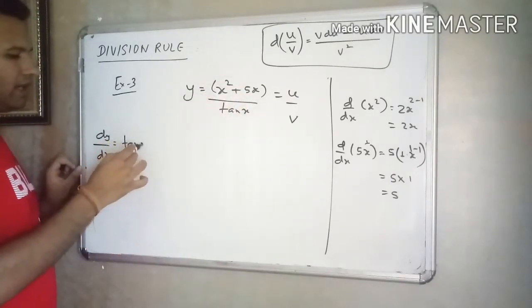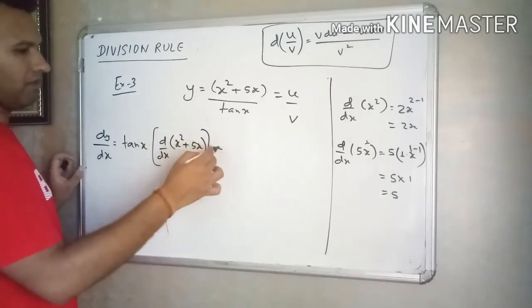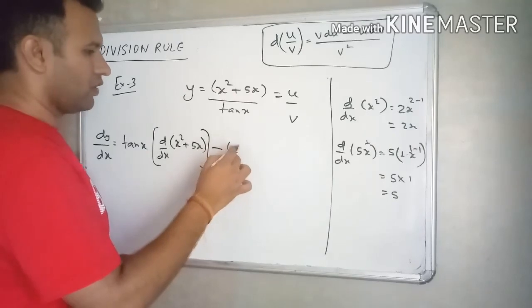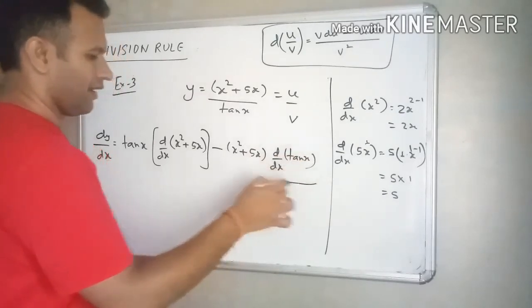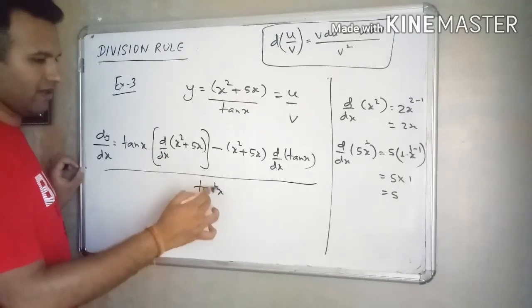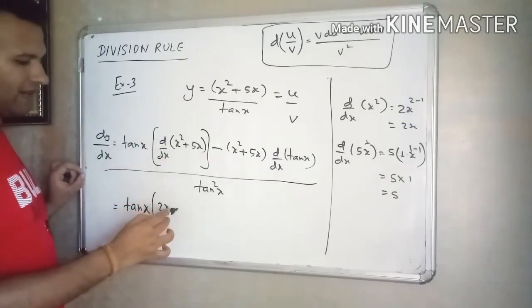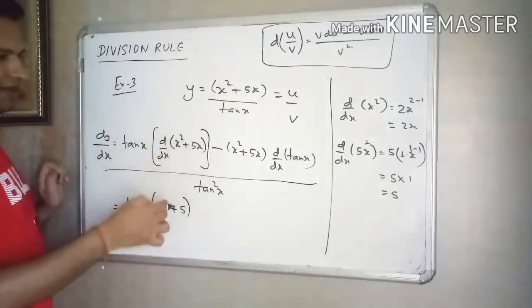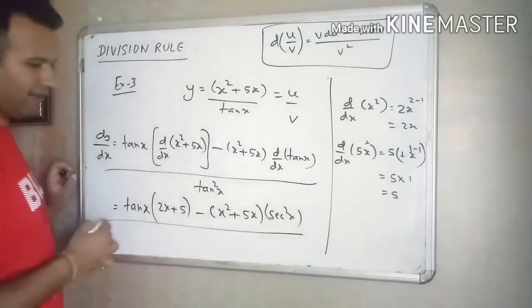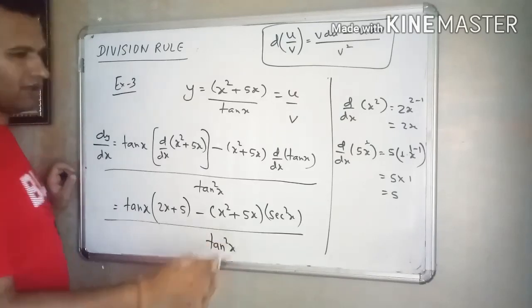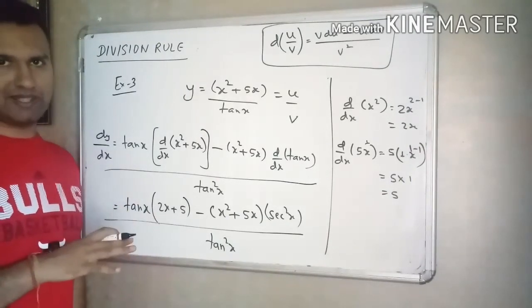Applying the division rule v du minus u dv by v square: tan x into derivative of x square plus 5x, minus x square plus 5x into derivative of tan x which is sec square x, all divided by tan square x. That is the answer. In the next lecture we will discuss the chain rule.